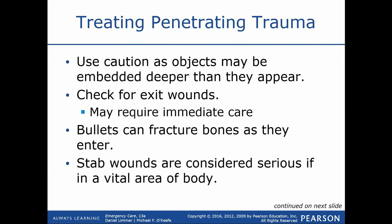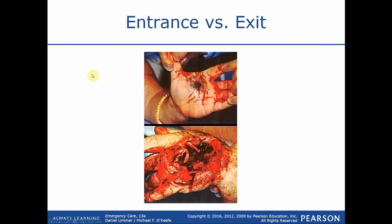For gunshot wounds we can also factor in the caliber of the weapon, the type of weapon, and the type of ammunition — all of these play into the mechanism of injury. Here's a good representation of an entrance versus an exit wound: on the palm we have the entrance wound, which is relatively small with not a lot of bleeding; on the back side though, we have a complete blowout from the cavitation of the wound.